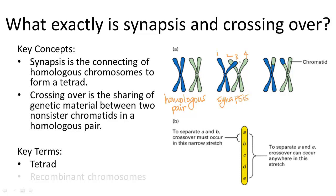Crossing over is the actual exchange of genetic information, where pieces of both chromosomes break off and reattach to the opposing homologous chromosomes. The completed exchange creates recombinant chromosomes with four different sister chromatids, as opposed to only two different types before the exchange. These four sister chromatids are then separated into four different gametes through meiosis 1 and meiosis 2.